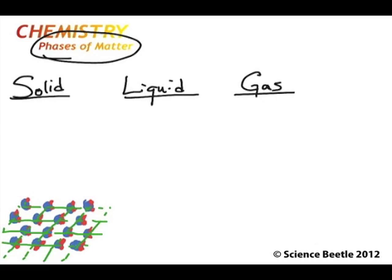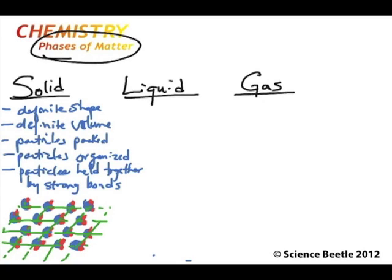And this is just one layer, but these particular atoms are going to align themselves layer upon layer upon layer. So you really start to form a very organized structure to the solid. And so let's go ahead and write some of those characteristics here underneath solid. Some of the characteristics of solids is that they have a definite shape, they have definite volume, the particles are packed together, the particles are also organized, and the particles held together by very strong bonds.